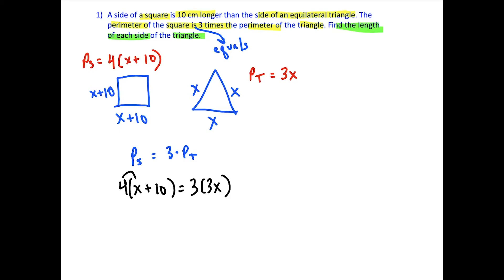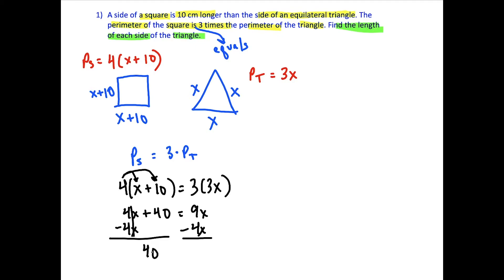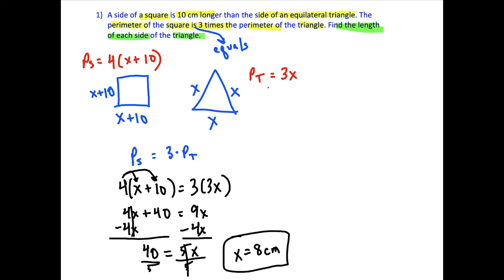All we have to do now is solve this equation. On the left side we distribute: 4x plus 40 equals 9x on the right. Subtracting 4x from both sides gives 40 equals 5x. Dividing both sides by 5, we get x equals 8 centimeters. The question asked for the length of each side of the triangle, and each side is x units long, so x equals 8 centimeters is our answer.